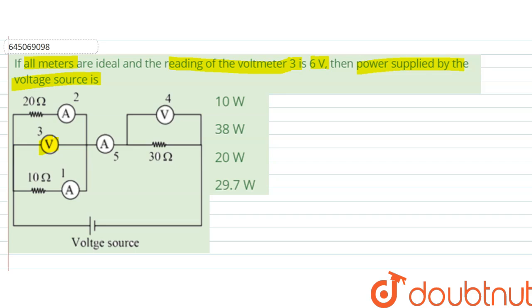So first of all, we'll find the equivalent resistance here. Since this 20 ohm and 10 ohm are parallel to each other, we would have 20 into 10 by 20 plus 10 to be the equivalent resistance R dash. We can simply write R1 which would be equal to 200 divided by 30, which is 20 by 3 ohms.